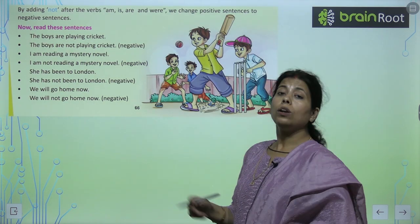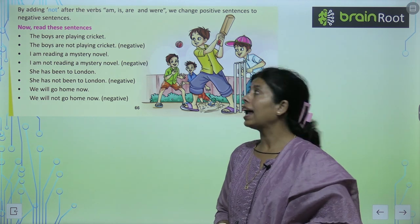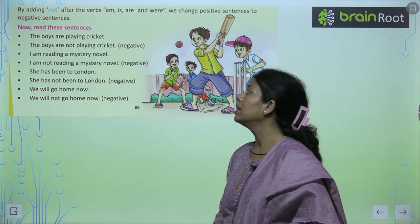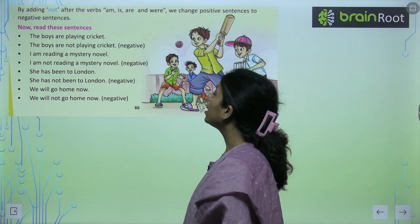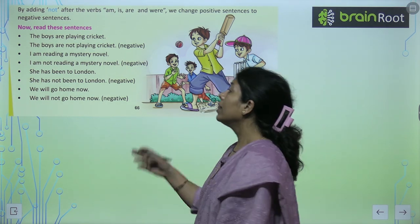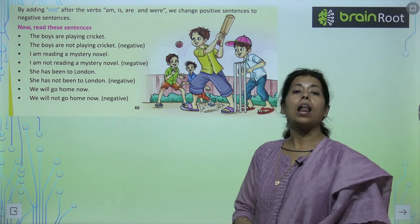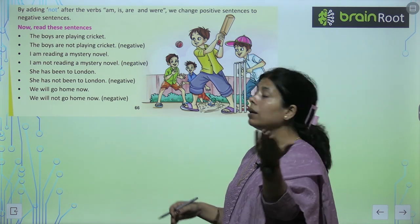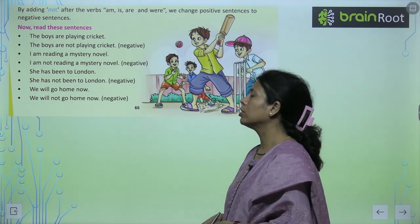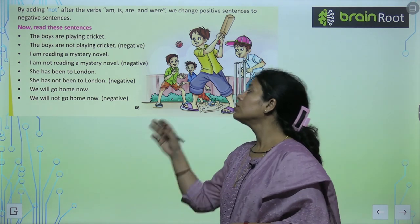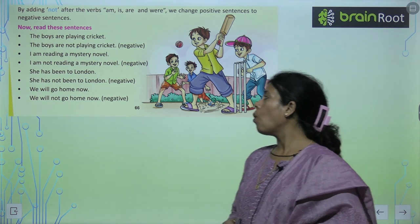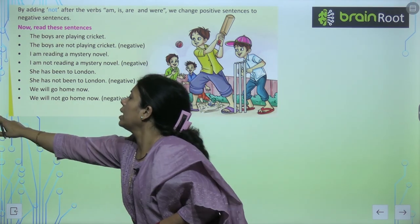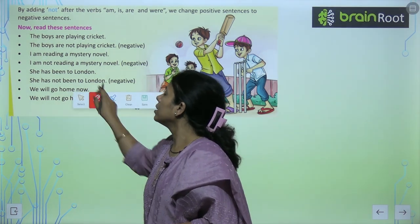By adding 'not' after am, is, and are, we change a positive sentence to negative. Now read these sentences: 'The boys are playing cricket' → 'The boys are not playing cricket.' 'I am reading a mystery novel' → 'I am not reading a mystery novel.' 'She has been to London' → 'She has not been to London.' 'We will go home now' → 'We will not go home now.' हमने 'not' लगाके इन सब को negative sentences में convert कर दिया है।